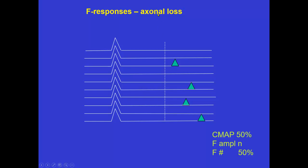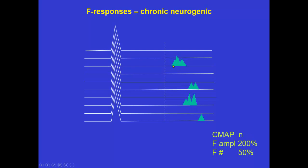If we go back to normal and look at axonal loss — for example, in nerve trauma or entrapment — we have reduced CMAP amplitude and fewer F-responses because we have fewer axons where F-responses can be transported. The amplitude, at least in the beginning before re-innervation, is normal. So CMAP is 50%, F amplitude normal, and number of F-responses is 50% of normal. If we follow this patient over three months, we see re-innervation: the CMAP becomes larger and those axons that still survive produce re-innervation, giving complex large F-responses, but there are very few. So CMAP is normal, F amplitude is increased — assessed visually — and persistence is low. That is the chronic neurogenic situation.